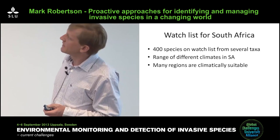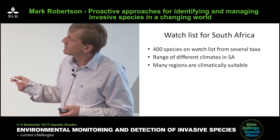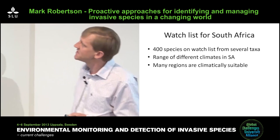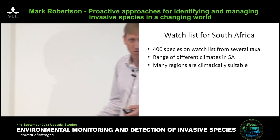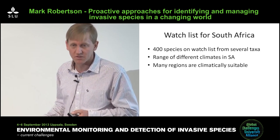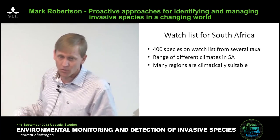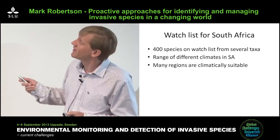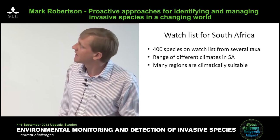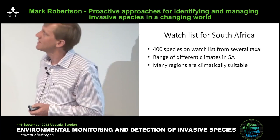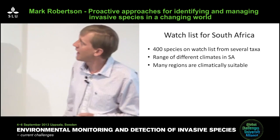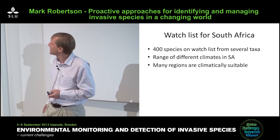A student of mine developed a watch list for South Africa using this methodology, and we have 400 species on the watch list from several different taxa — 400 species that could come in and cause a lot of trouble. This excludes the ones already in the country that are already a problem. We have so many partly because South Africa has such a range of different climatic conditions, and many regions of the world are climatically suitable.